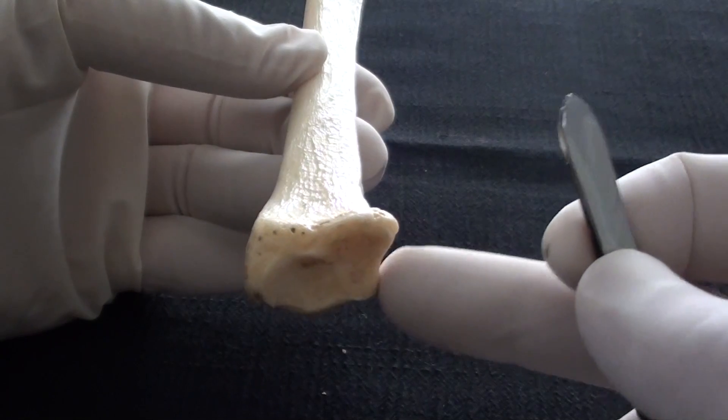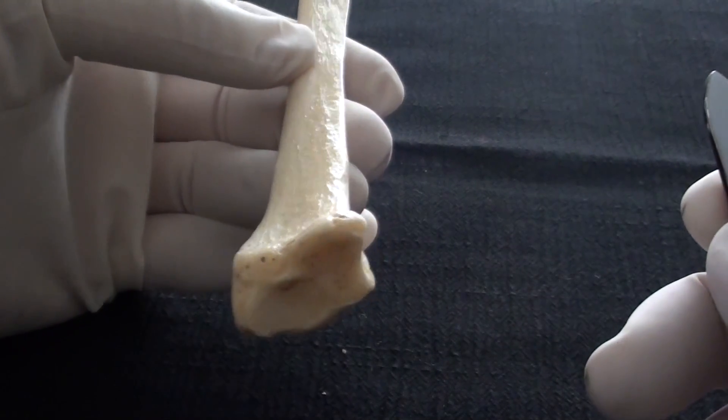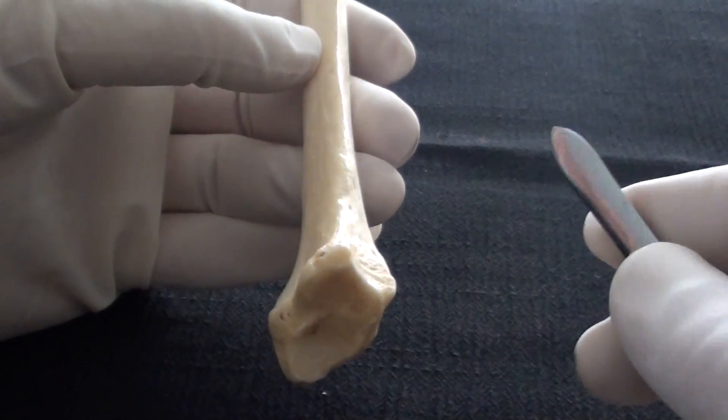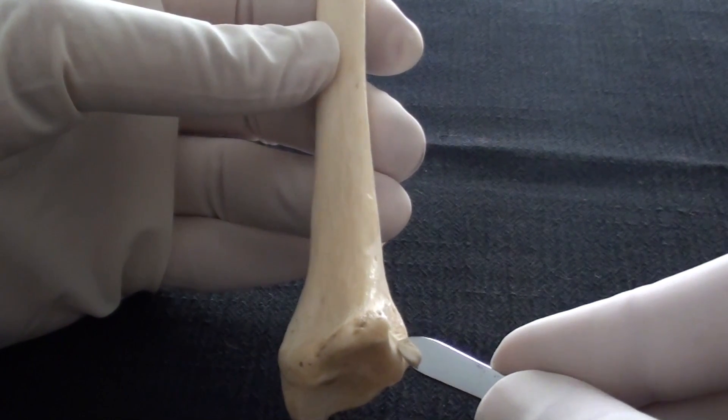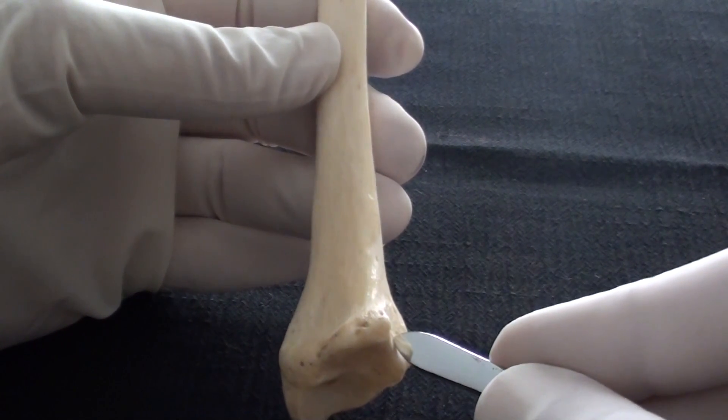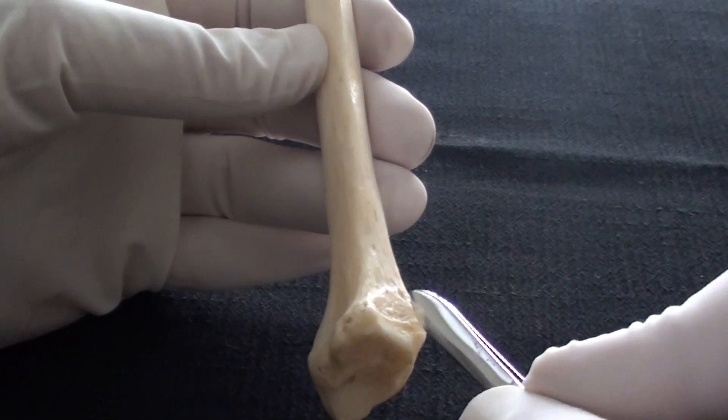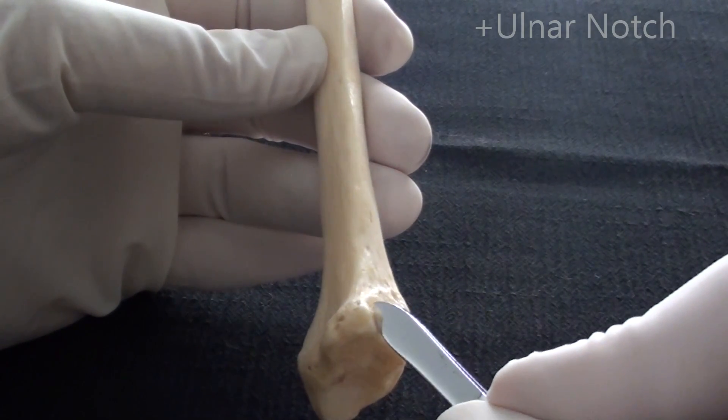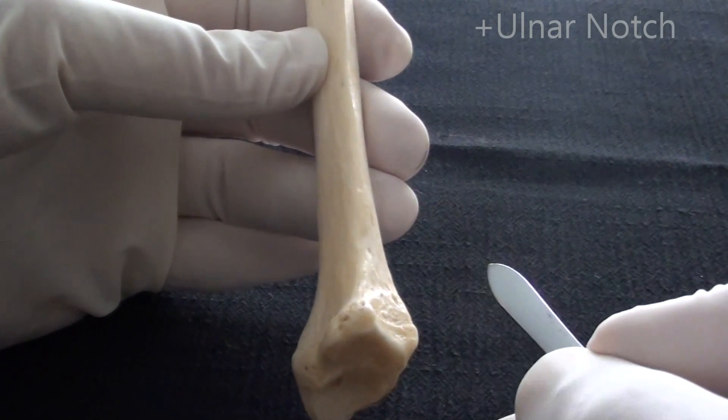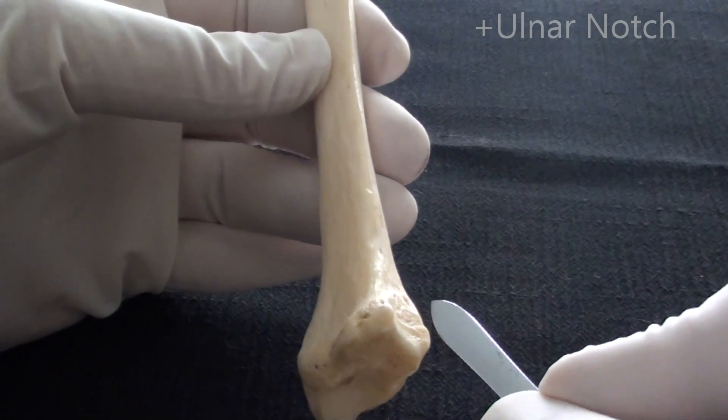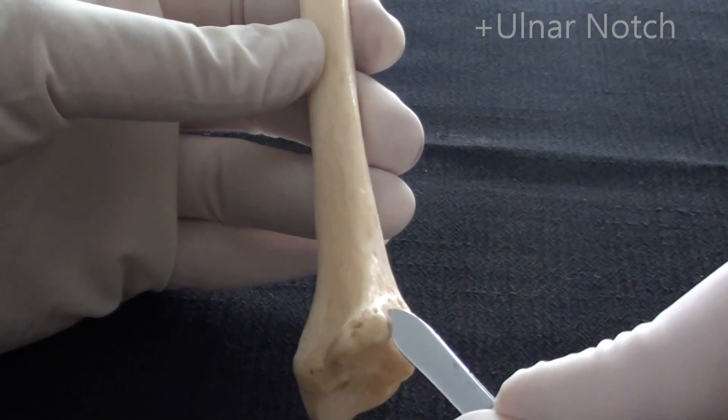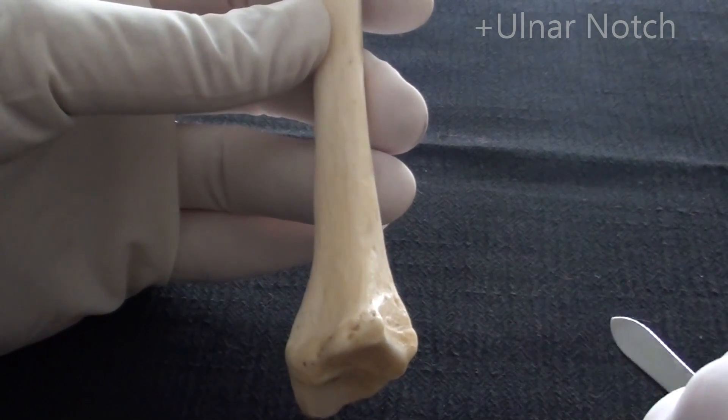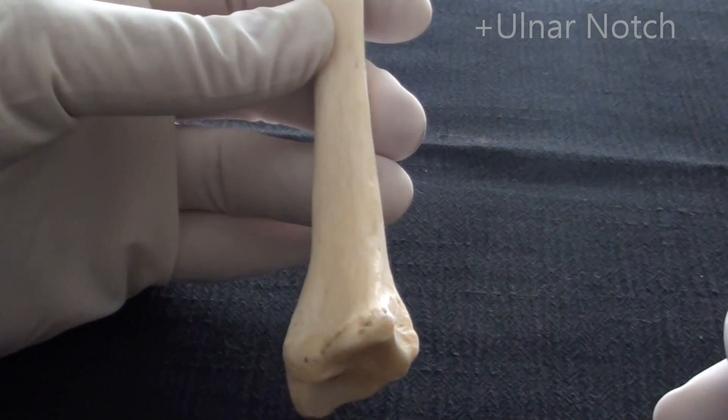On the medial side of the bone, we can find third articular surface, and that one will be in contact with the head of the ulna. This is the ulnar notch of the radius. Ulna has the radial notch, radius has the ulnar notch. At this point, radius and ulna will form the distal radio-ulnar joint.